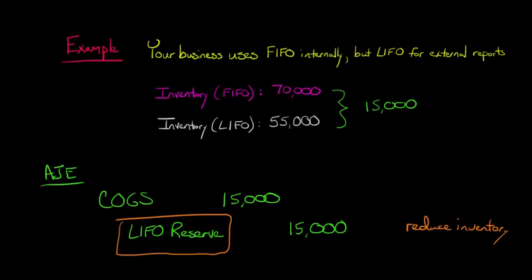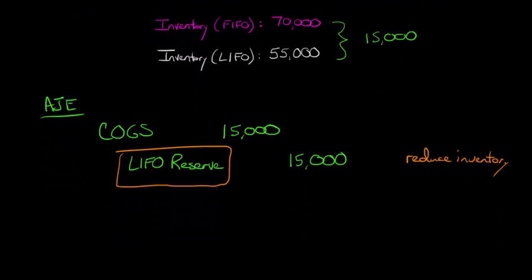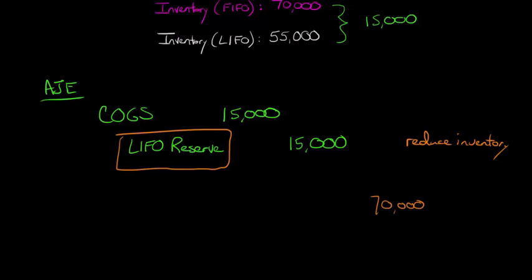Okay, so if we were thinking about our balance sheet, we'd say, for internal purposes, we were at $70,000 for inventory, right? We were at $70,000, but then we subtract out this $15,000 LIFO reserve. We subtract that out, and then that leaves us with inventory of $55,000,